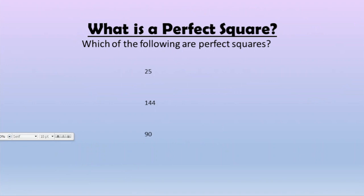Let's take a look at a few examples. I've put a few numbers up here — let's see which of these are perfect squares. To determine that, I am going to take the square root of each of these values. I'm going to do the square root of 25, the square root of 144, and the square root of 90. The square root of 25 — what number when multiplied by itself gives me 25? If I do the square root of 25, I am going to get positive 5 and also negative 5.